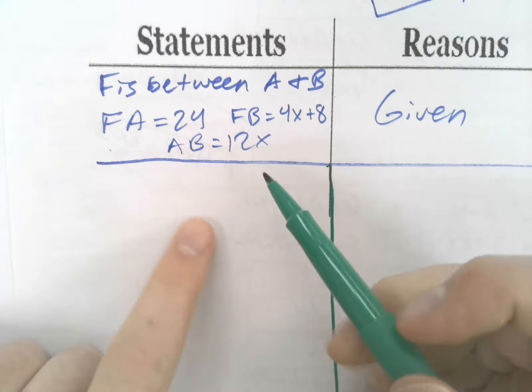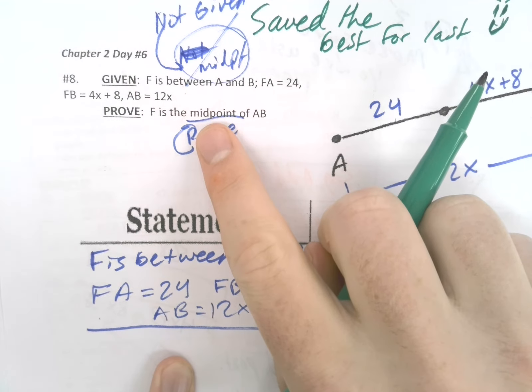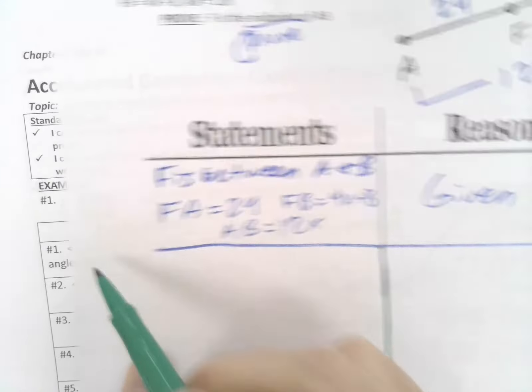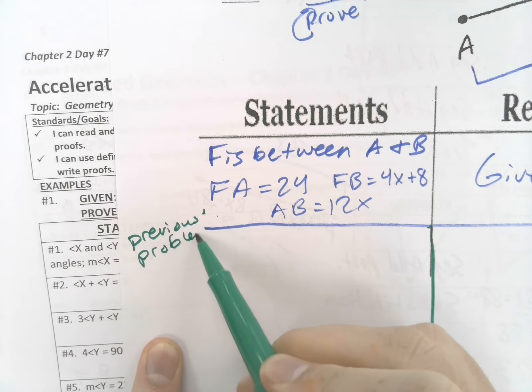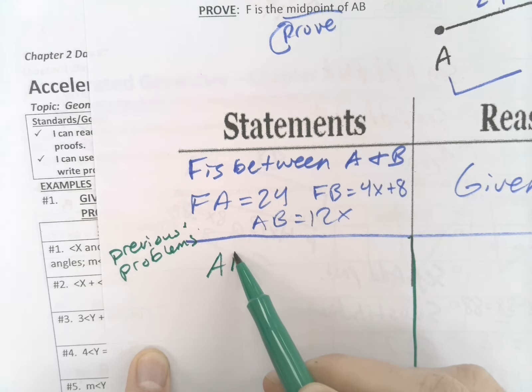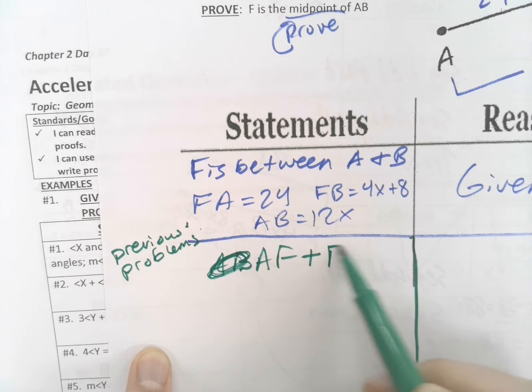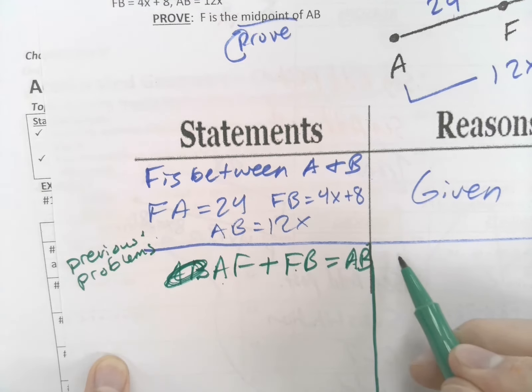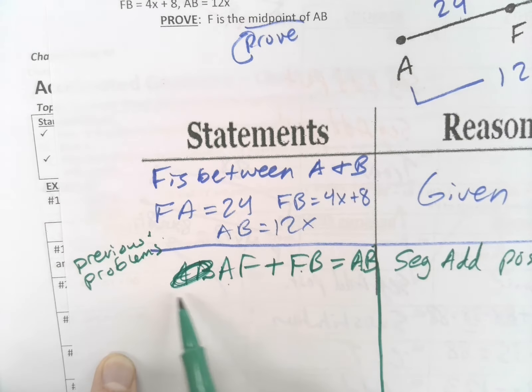But what we can do is say AF plus FB shouldn't that equal AB? Part plus part equals whole - we're talking seg add post. Now based off that, you guys know what's coming. We know what each of these pieces are, so we can say that 24 plus 4x plus 8 is really equal to 12x. And how can we do that? With substitution.